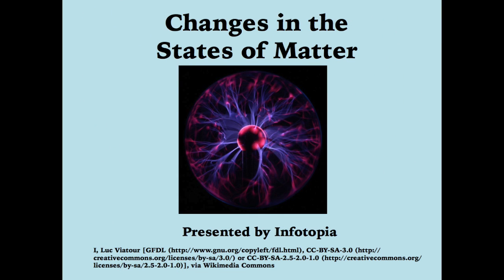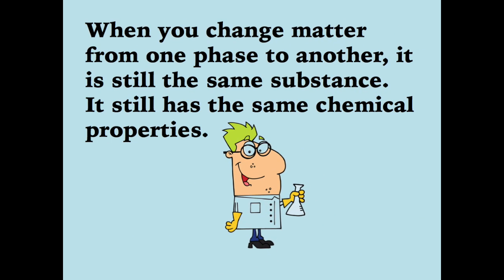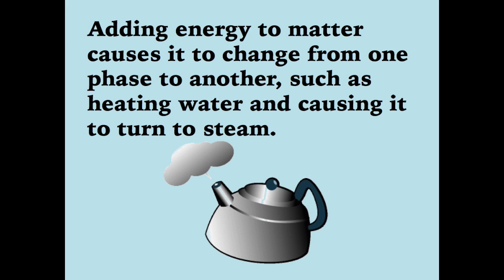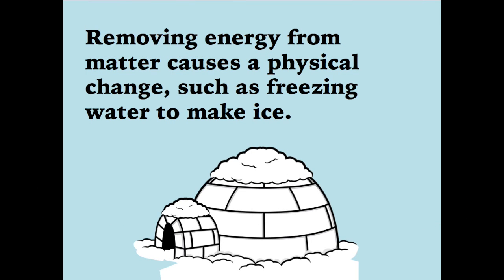Changes in the States of Matter, presented by Infotopia. When you change matter from one phase to another, it is still the same substance — it still has the same chemical properties. Adding energy to matter causes it to change from one phase to another, such as heating water and causing it to turn to steam. Removing energy from matter causes a physical change, such as freezing water to make ice.